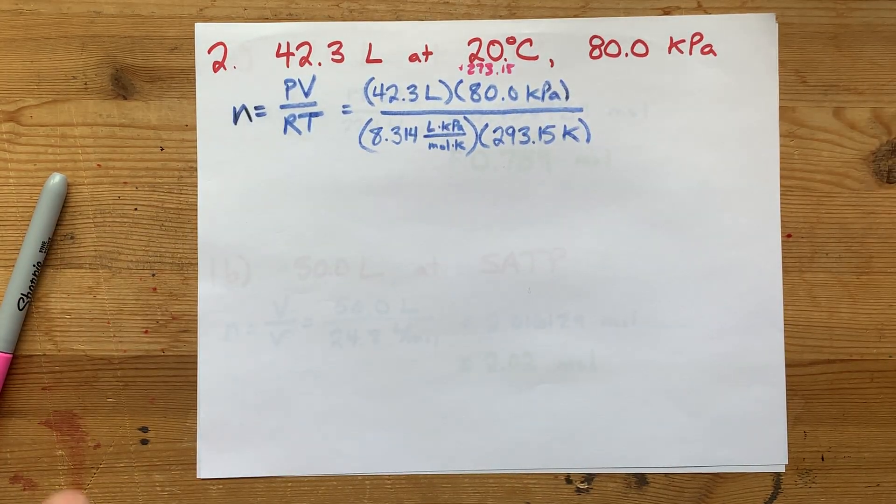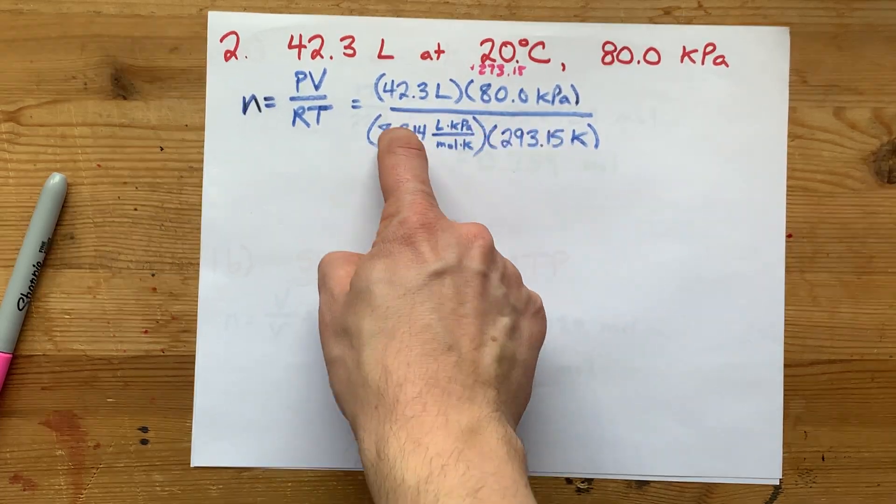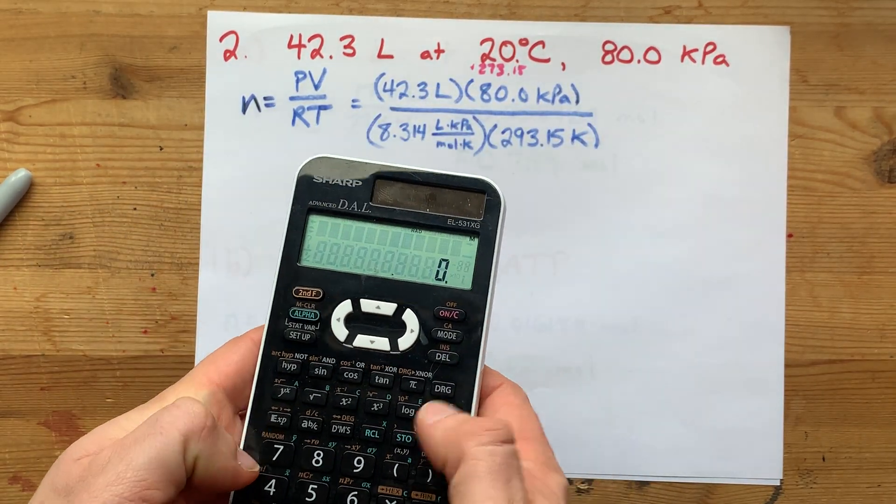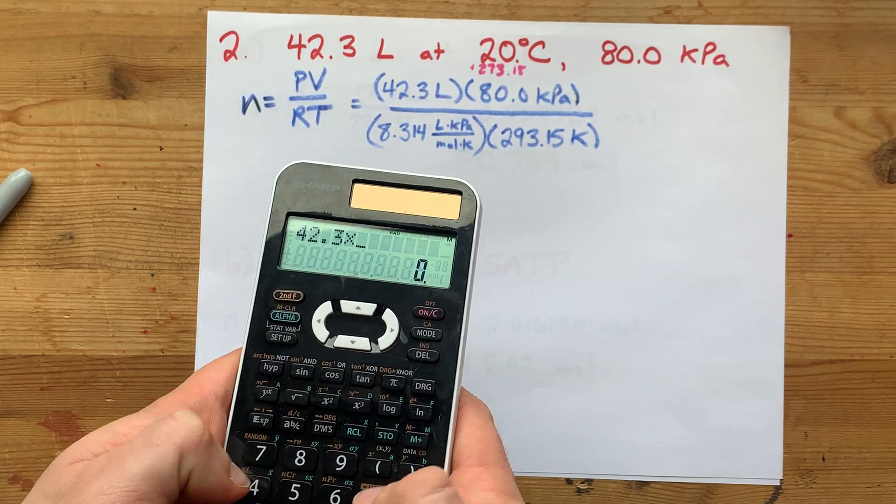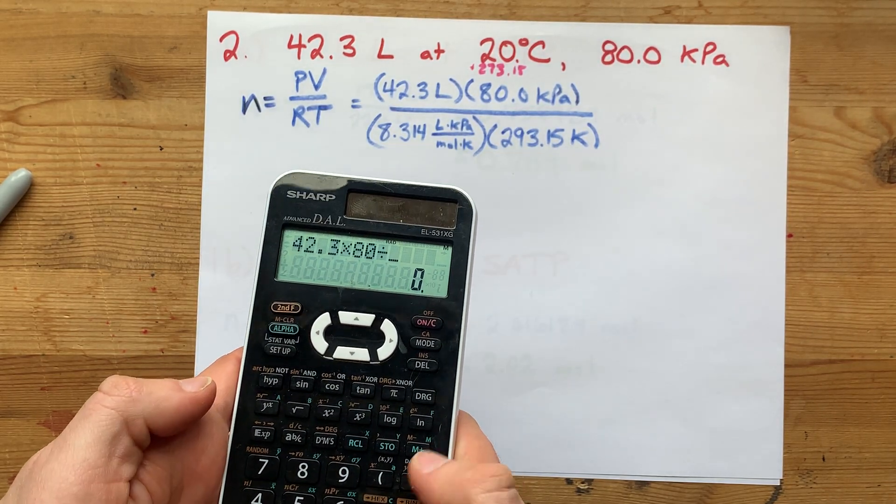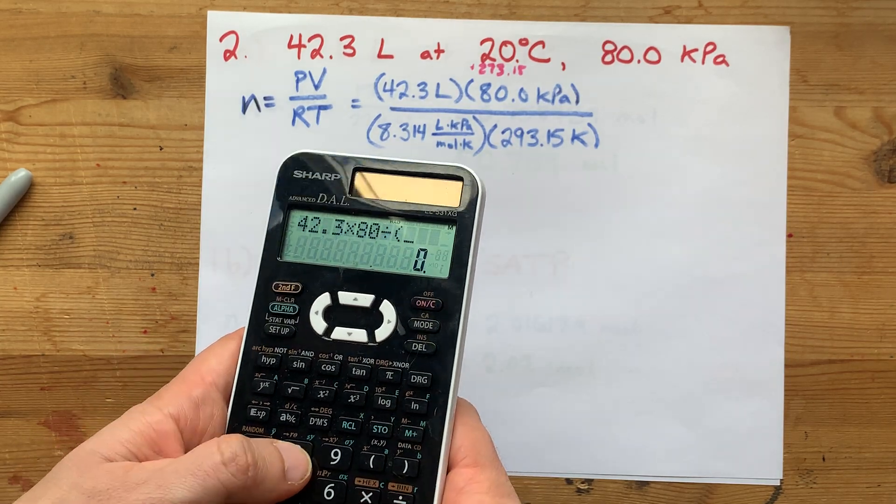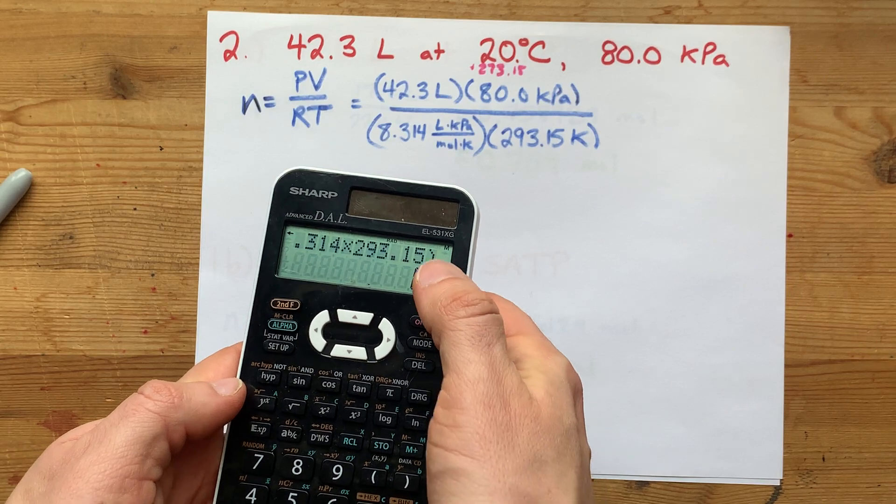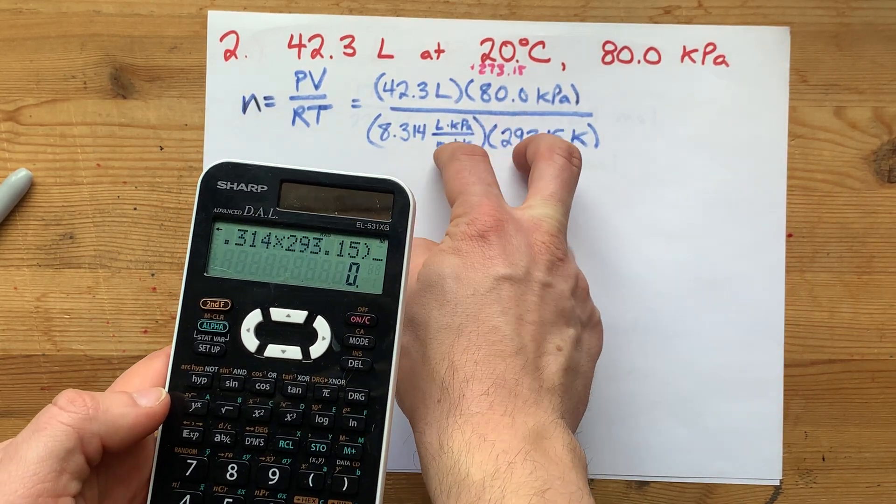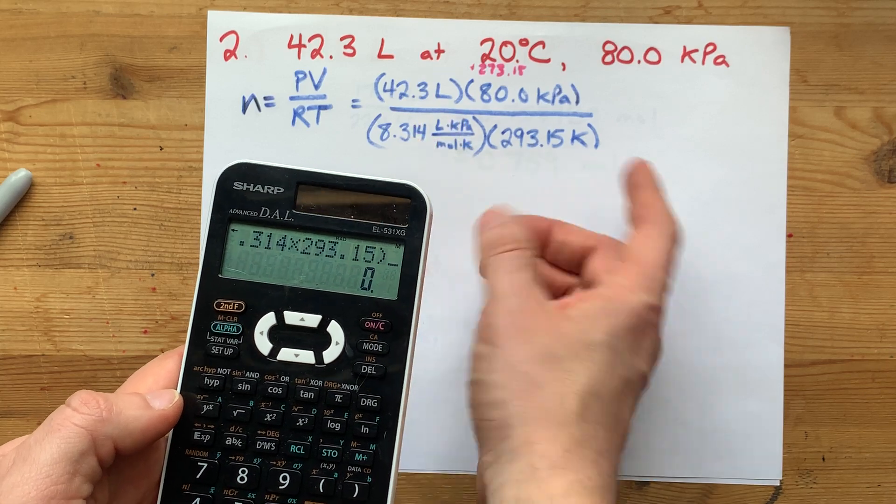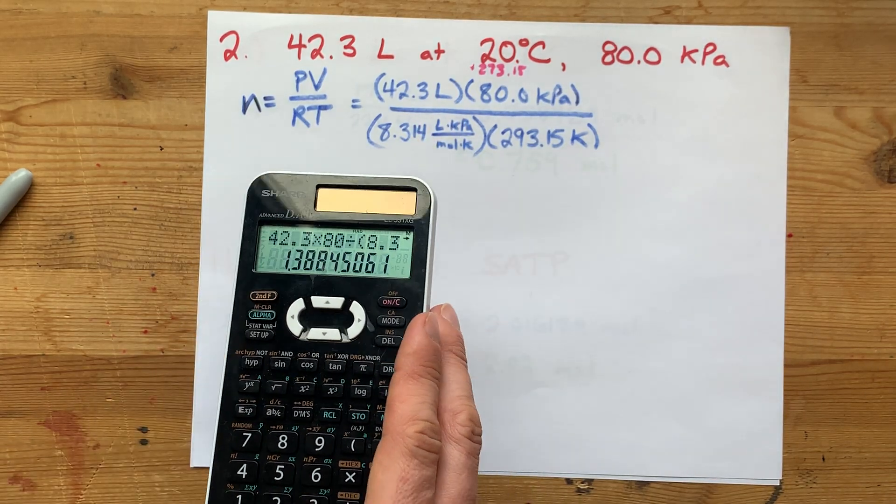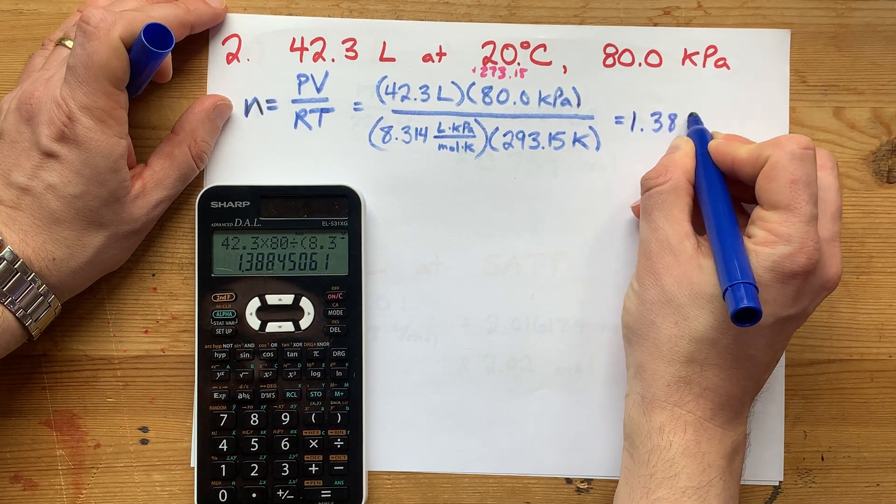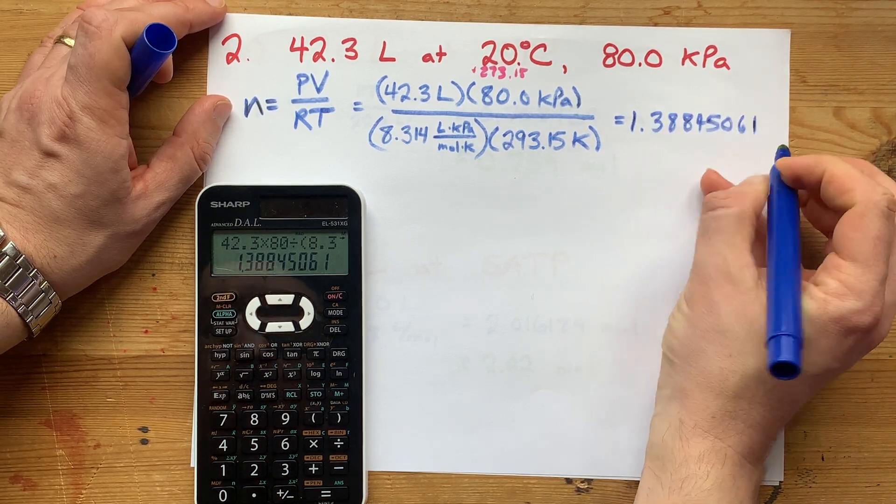I'll multiply the numerator terms, then divide by both denominator terms. I'll put my denominator in brackets: 42.3 times 80, divided by, in brackets, 8.314 times 293.15. The brackets ensure you're dividing by both terms, not just one. My answer is 1.38845061.